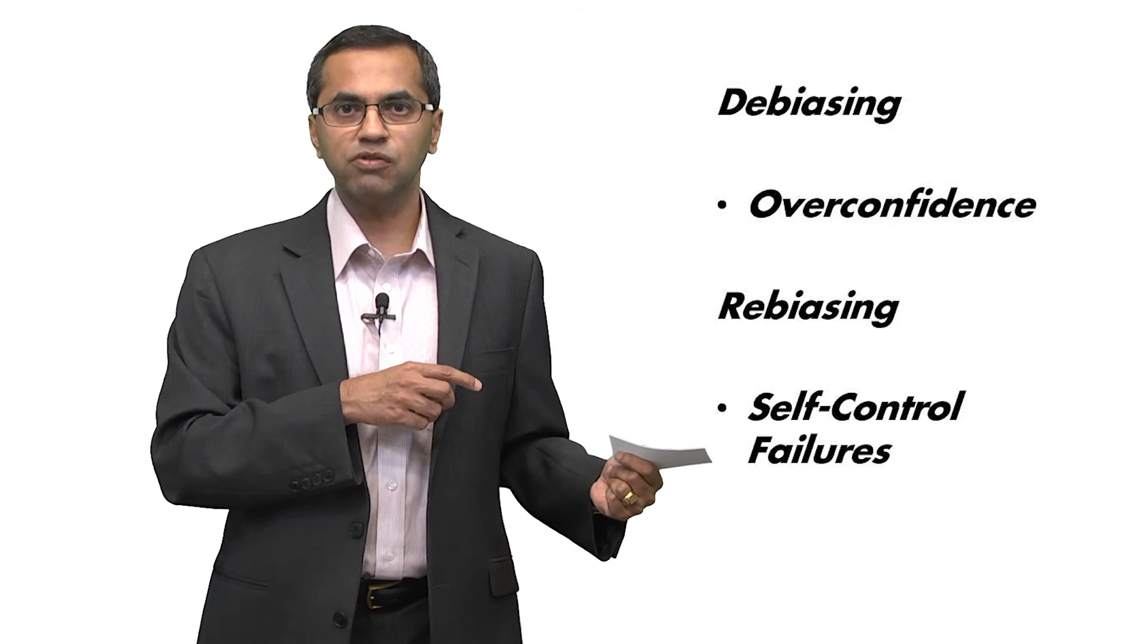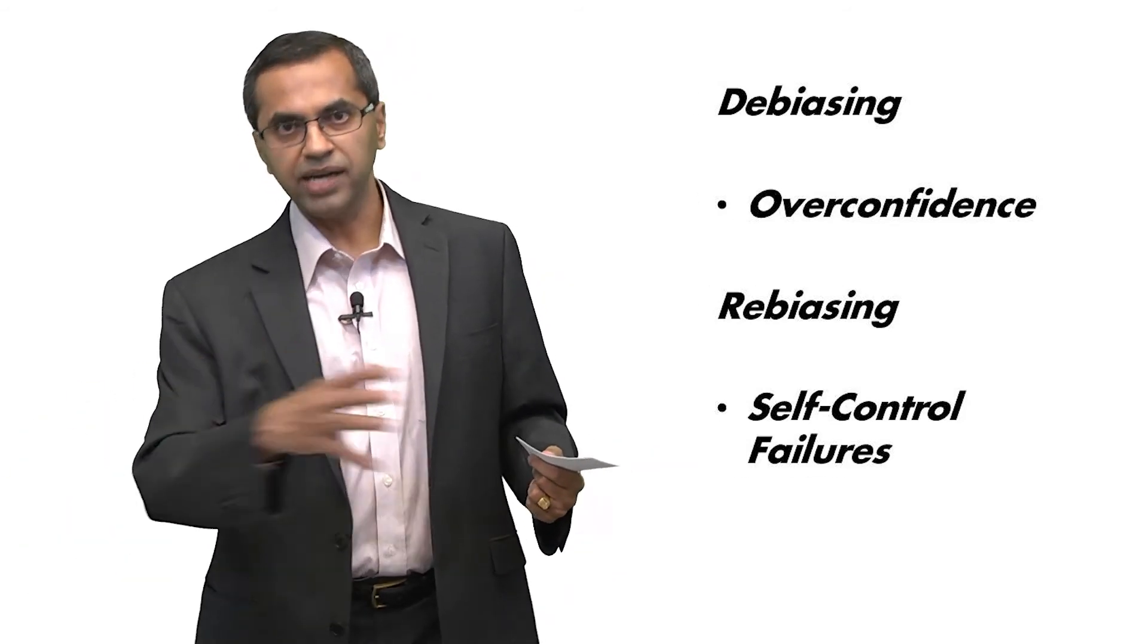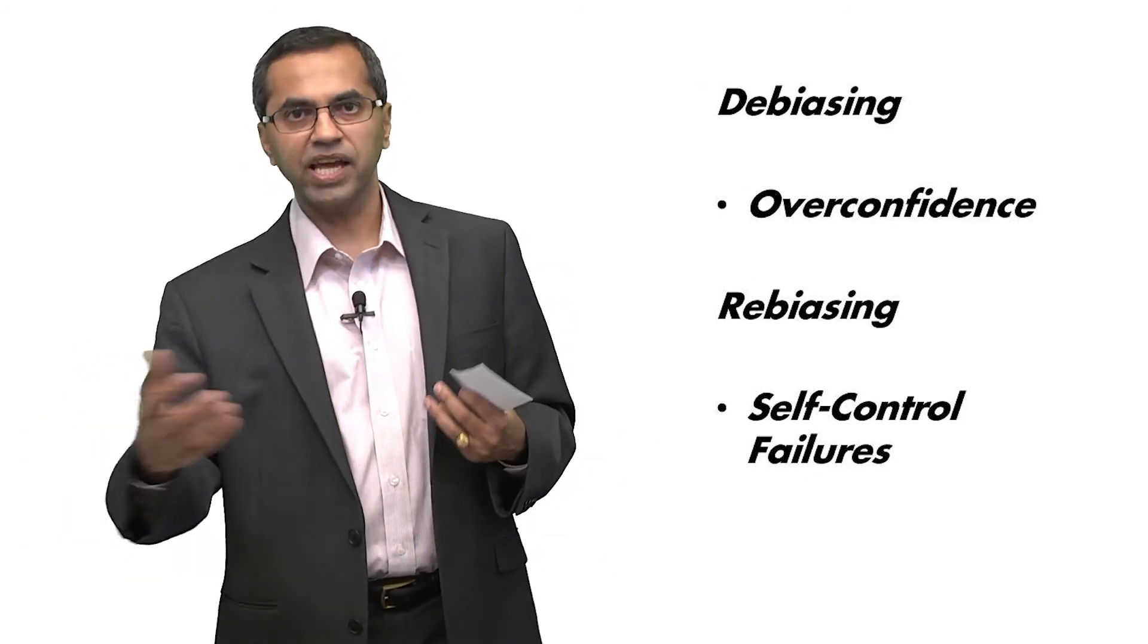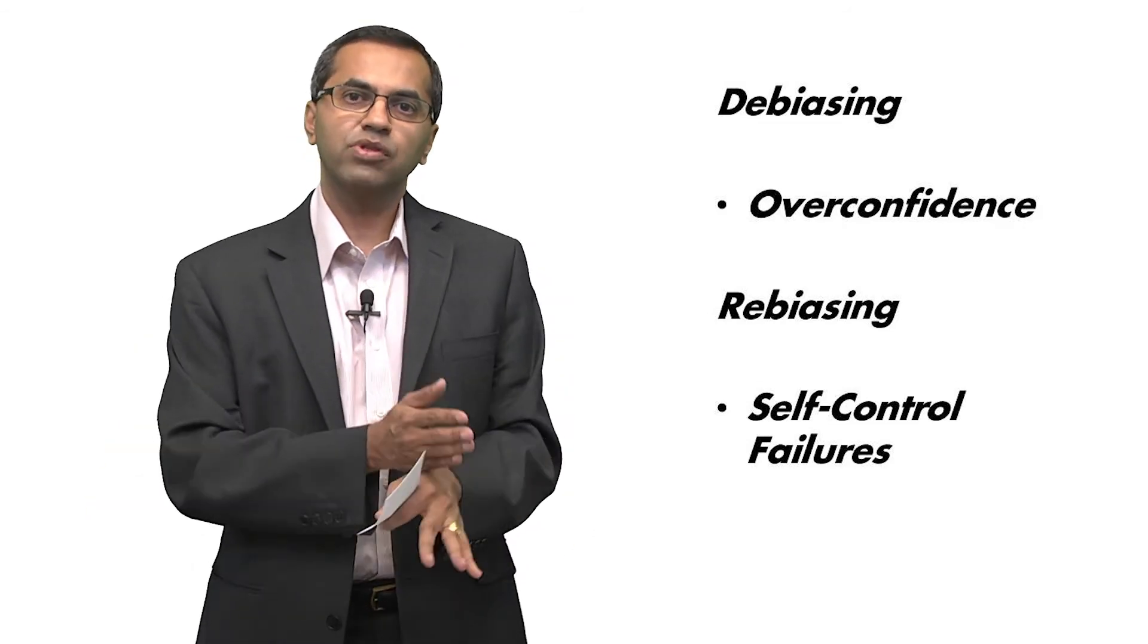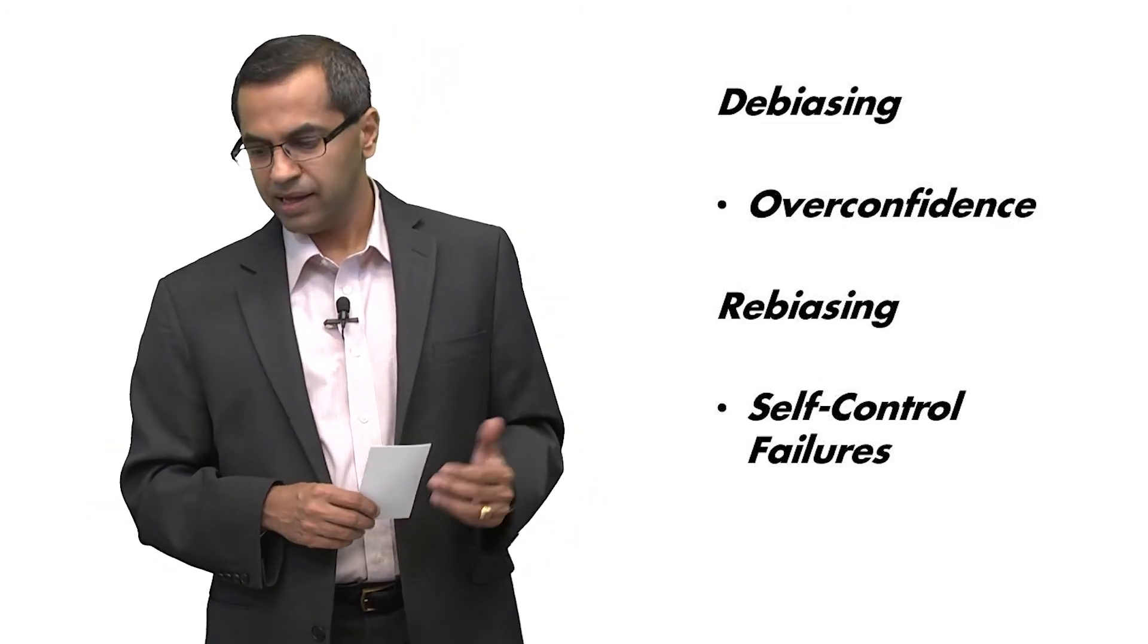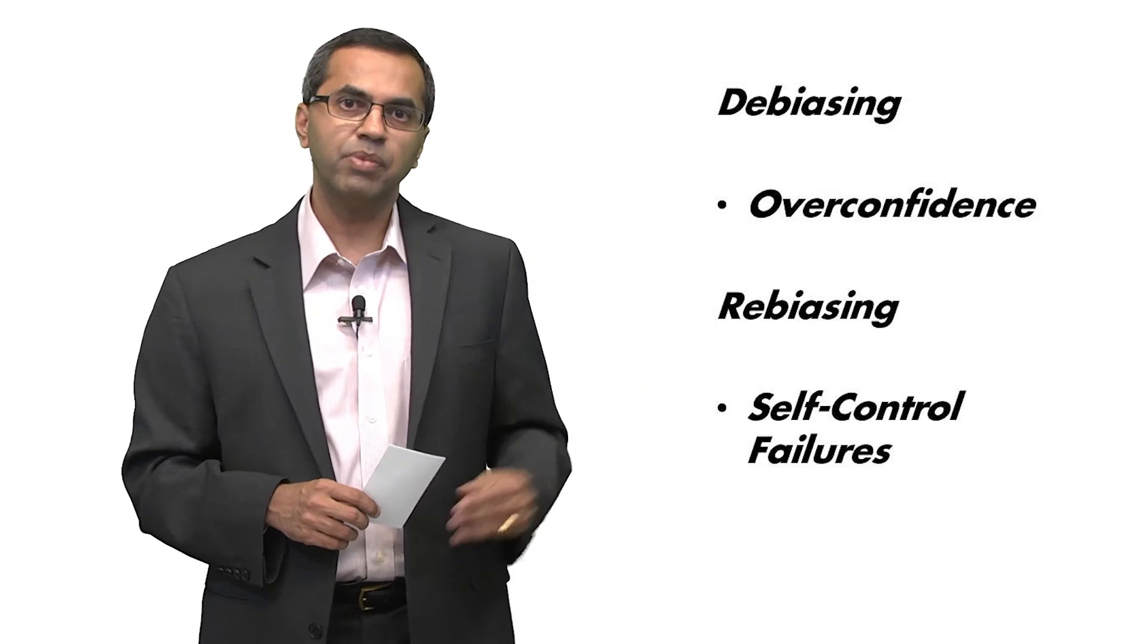You've got a bias, a self-control failure. You take two other biases, the fact that people forget, the fact that they have loss aversion to cancel out the effects of the first bias. And that's a classic example of a re-biasing strategy.